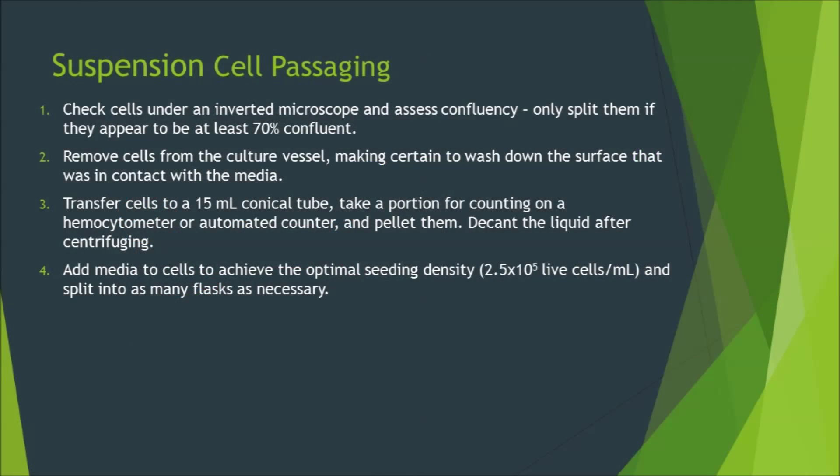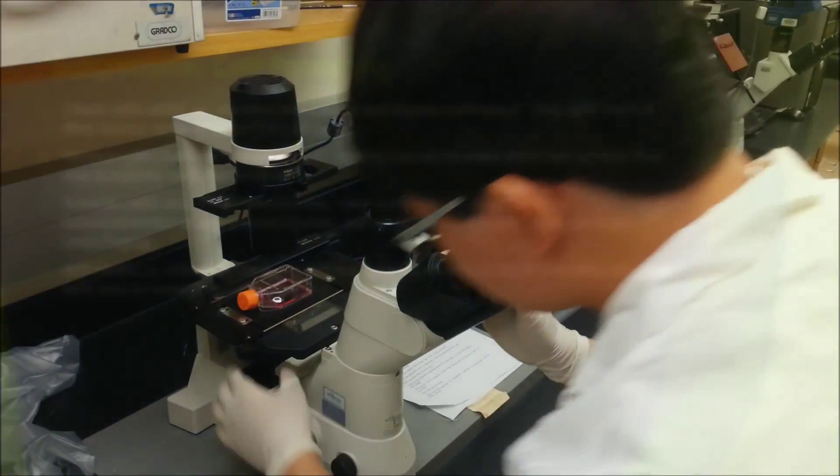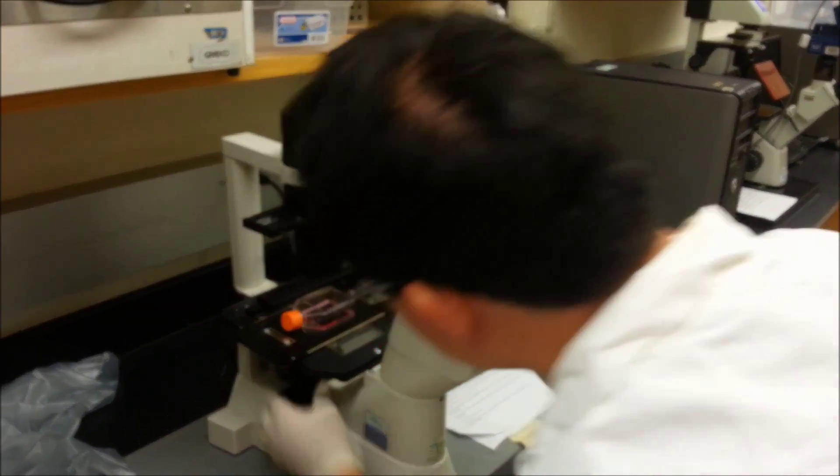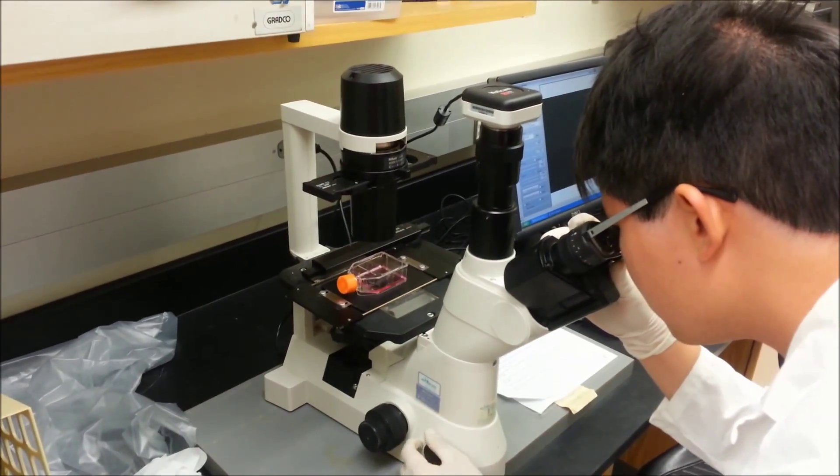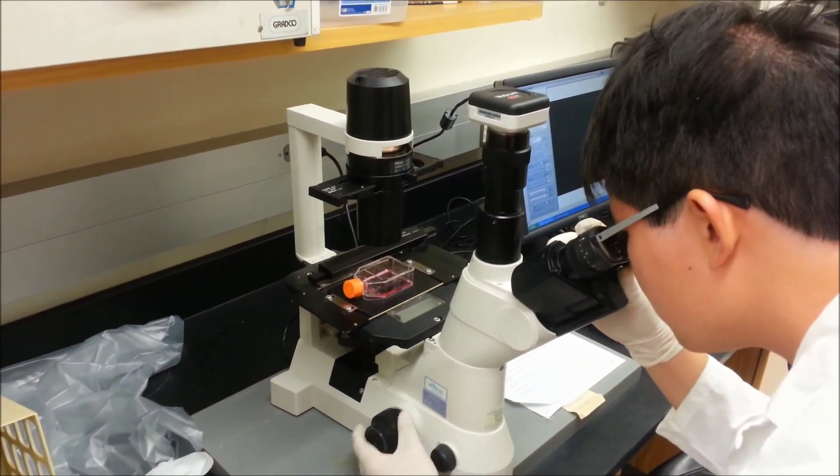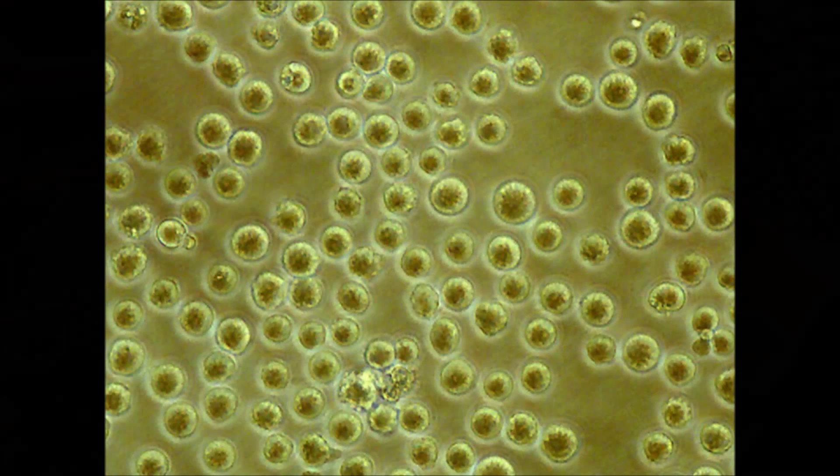Feel free to pause the video and take note of these step-by-step instructions for suspension cell passaging, but we will discuss these steps as we demonstrate the technique. Begin by checking the confluency of your cells under an inverted microscope. For suspension cells, they should look something like this when they are ready to be passaged.